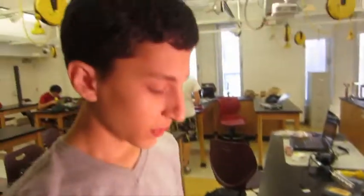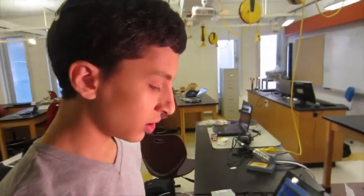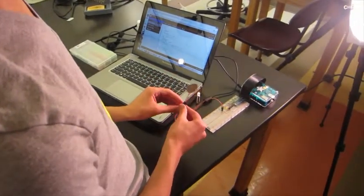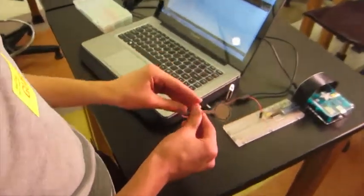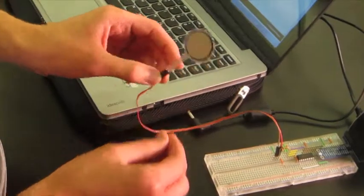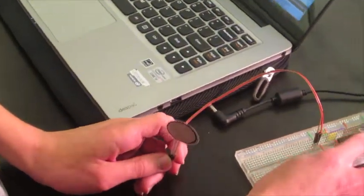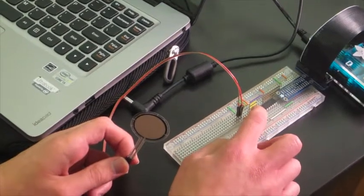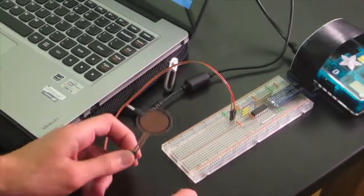The way this sensor works is it's a variable resistor. The harder I press or the more weight you put on it, the higher value it sends to the Raspberry Pi. Between the Raspberry Pi and the sensor, I have an analog to digital converter because the Raspberry Pi doesn't have any analog input.